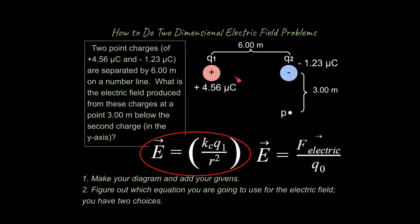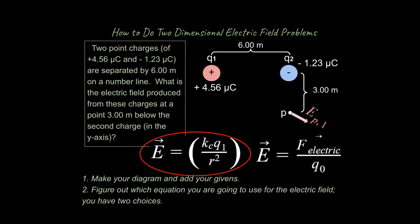From Q1, is this going to be an attractive or repulsive electric field? We're going to assume our small test charge is always positive. So if that's the case, two positive charges repel each other, and so our very first vector — the electric field at point P from charge 1 — will be directed away. For the second vector, Q2 and point P are in a vertical line.